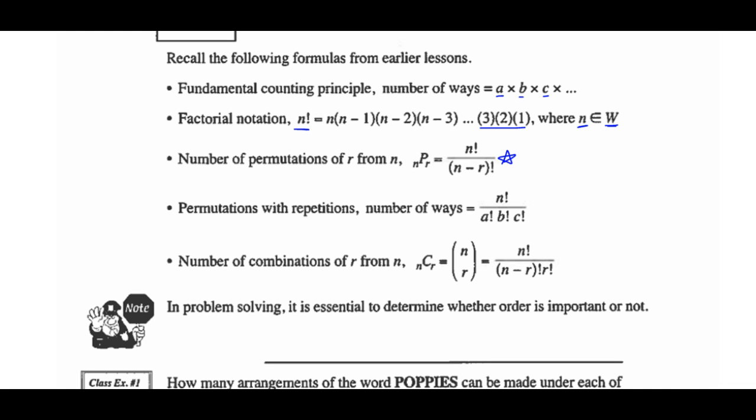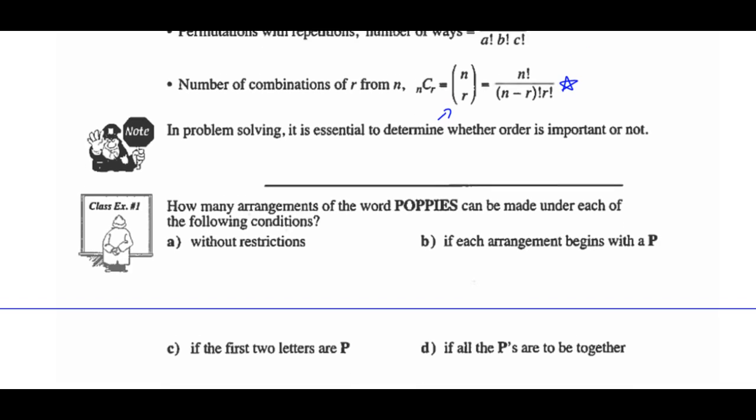The number of combinations of R taken from N at a time — N combinations of R — can be written using parentheses, or as N factorial over (N minus R) factorial times R factorial. Again, that one is on your formula sheet. You have to know how to use it, but you do not have to memorize it.